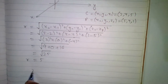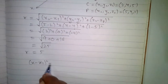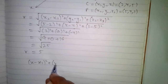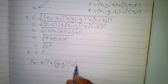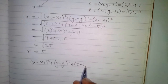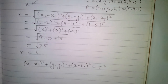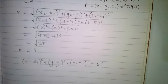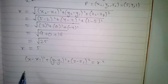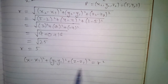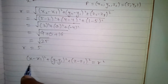We will apply the standard equation of the sphere: (x minus x1) whole square plus (y minus y1) whole square plus (z minus z1) whole square equals r squared. This is the standard equation of the sphere, and now we will put in the values of x1, y1, and z1.